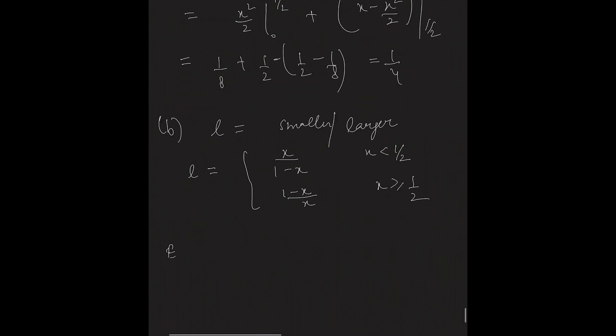Therefore, the expected value of l could be written as integration 0 to half x upon 1 minus x dx plus integration half to 1, 1 minus x upon x dx,